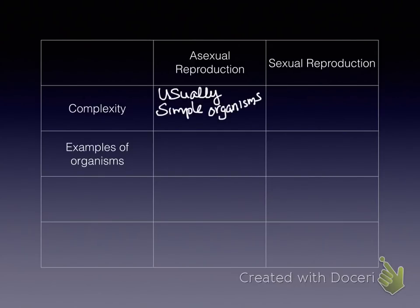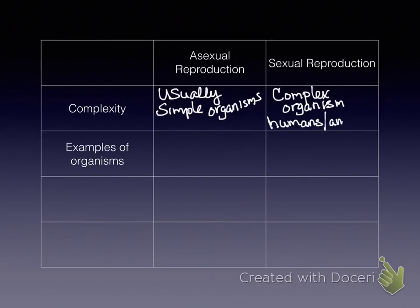In asexual reproduction, it's usually simple organisms. Flashing back to our kingdoms: what kingdoms are simple organisms in? Archaea and bacteria. And in sexual reproduction, it's going to be complex organisms like humans and animals.